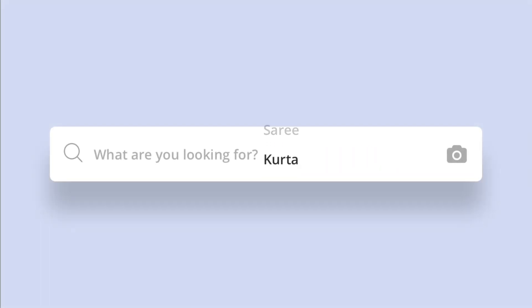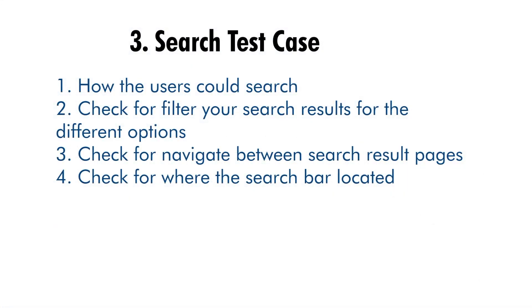Search test cases: customers rely on the search function to find products, categories, or brands on an e-commerce website. It is the most commonly used feature, so it is essential to check that the function works properly. Key scenarios include: is it clear how the user can search? Are all search possibilities functioning correctly? If you claim the user can search by brand name, check if it returns relevant information. Can the user filter search results by brand, reviews, rating, and other options? Can the user navigate between search result pages?